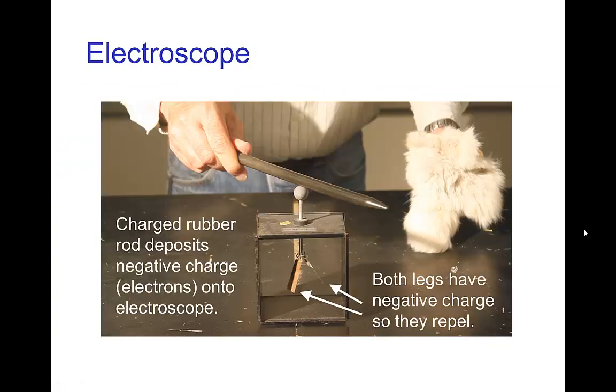So as I said, the charged rubber rod deposits a negative charge in the form of electrons into the electroscope. So the legs of the electroscope, because the metal top is connected to these metal legs, everything metal there becomes charged and because everything has the like charges, they repel and the legs separate.